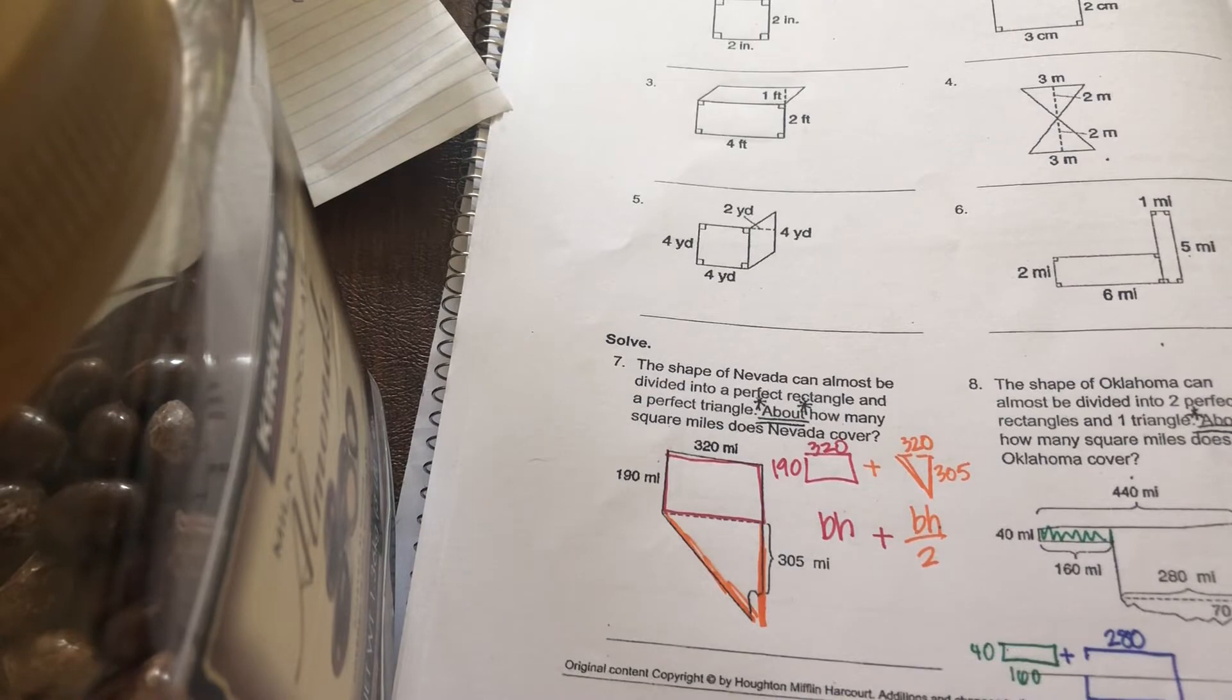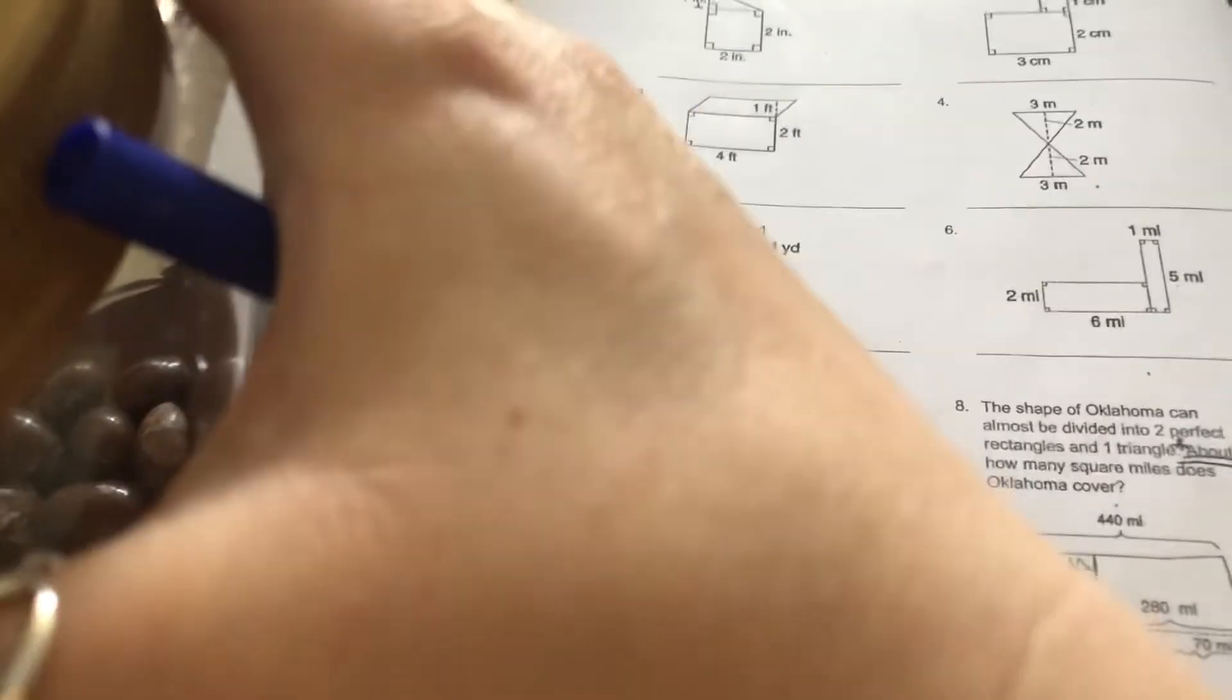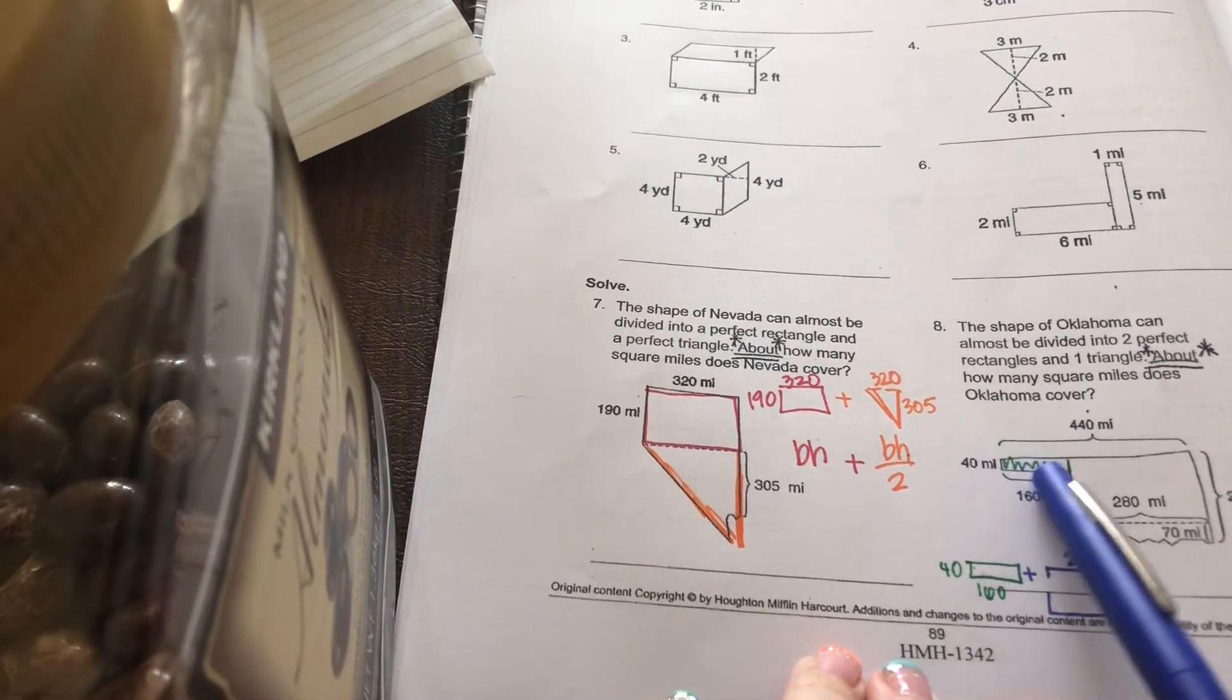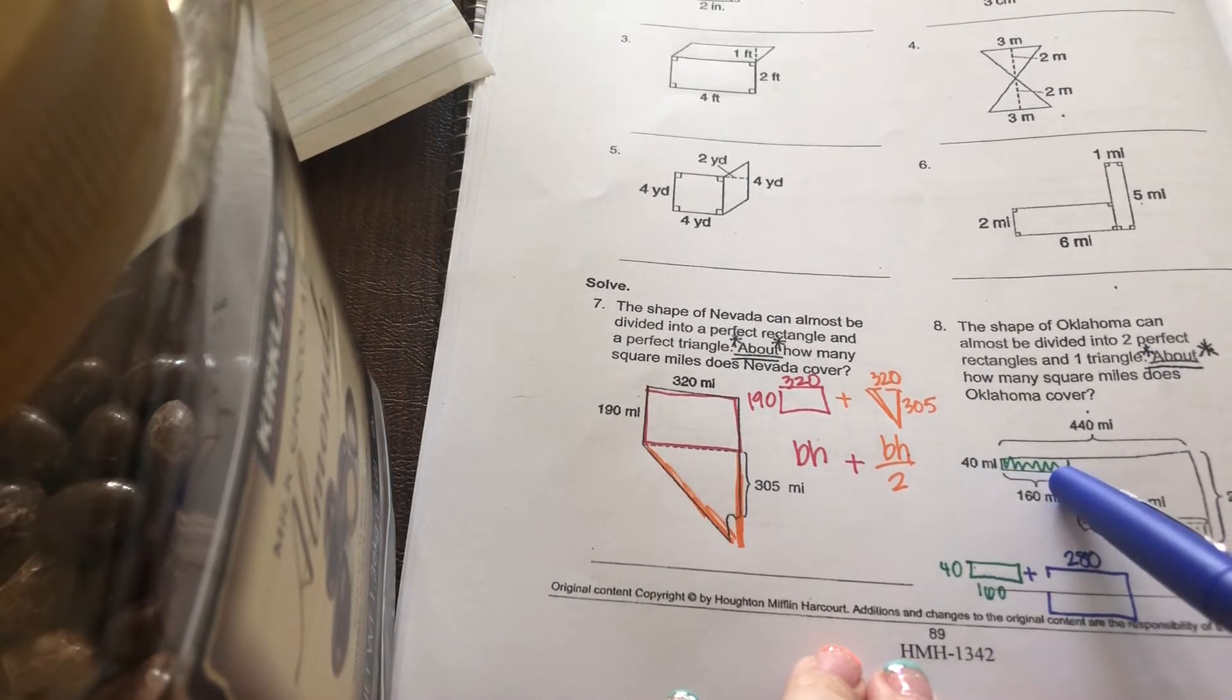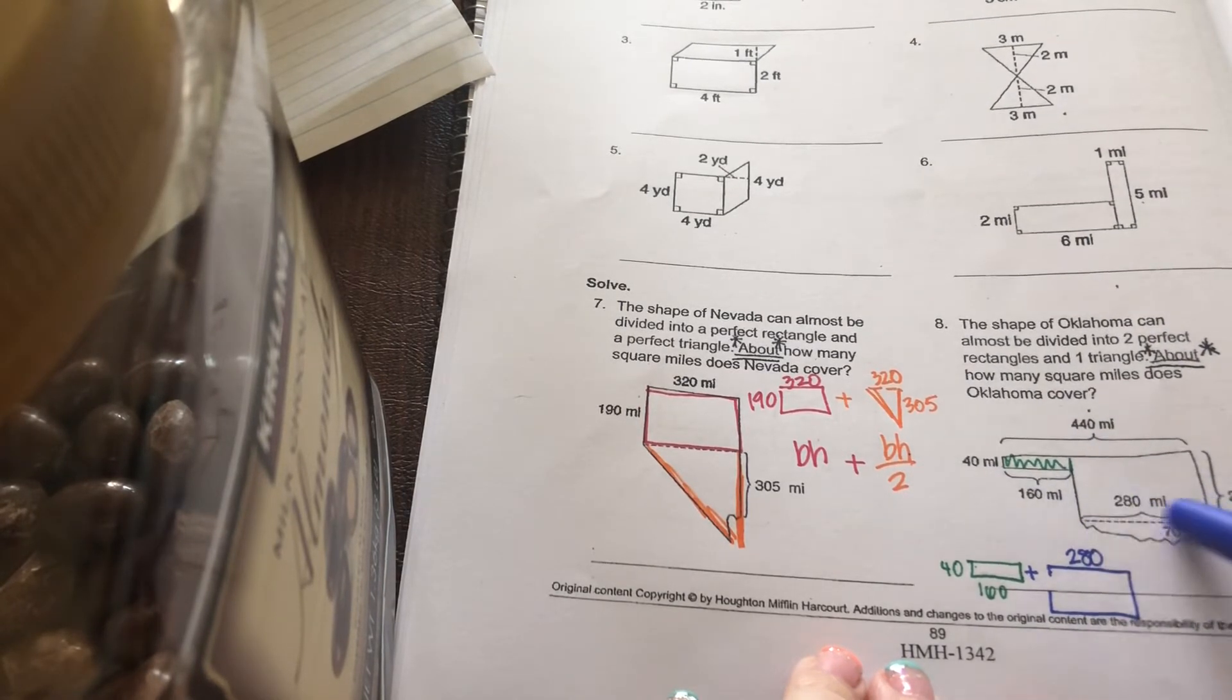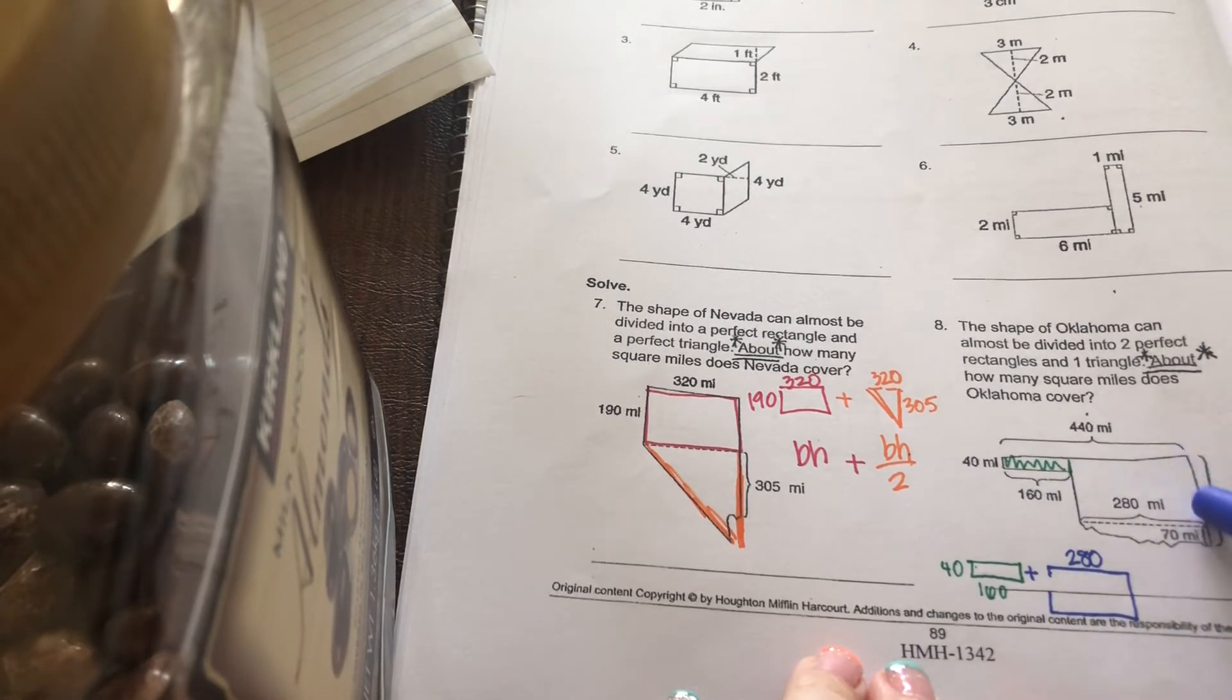For this one, number eight. It's actually made up of three shapes because this one comes down. I'd say you have this side rectangle. That's easy to see. This is 40 by 160. And then you have this rectangle right here, which is easy. This is 280, but this part's a little bit trickier.